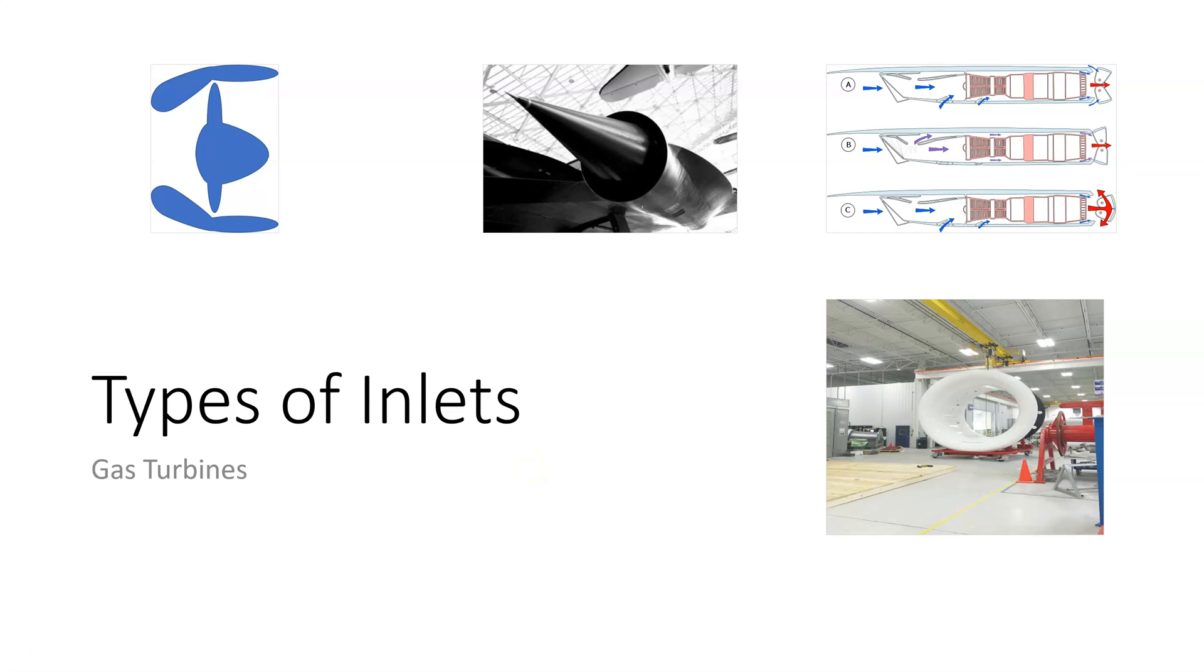So in this screencast we're going to look at the different types of engine inlets. We have inlets for subsonic aircraft, for supersonic aircraft, inlets that go between subsonic and supersonic, and then we'll look at some special inlets.